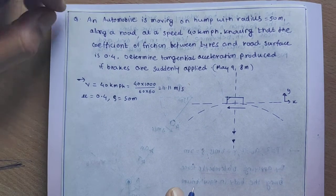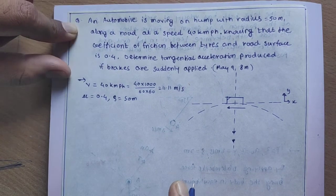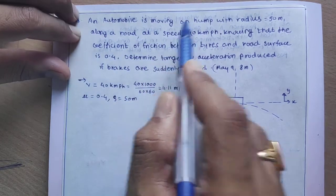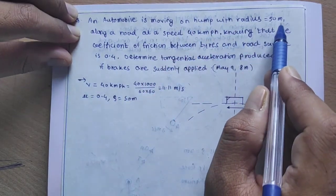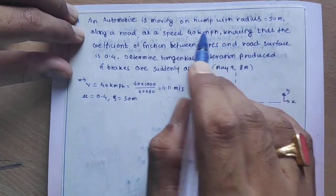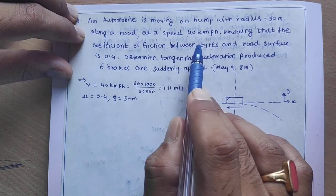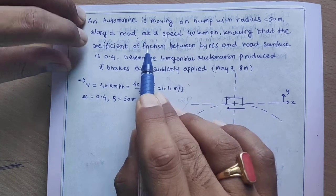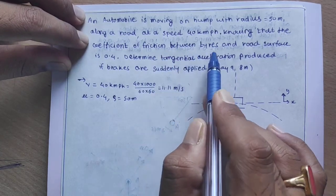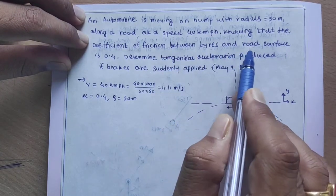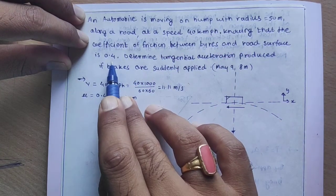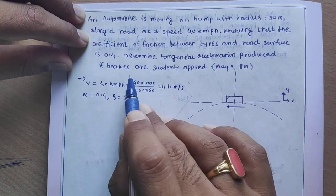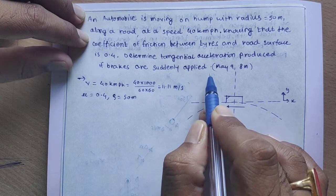Dear students, we will study the next question. An automobile is moving on a hump with radius 50 meters along a road at a speed of 40 km per hour, knowing that the coefficient of friction between the tires and road surface is 0.4. Determine the tangential acceleration produced if brakes are suddenly applied.